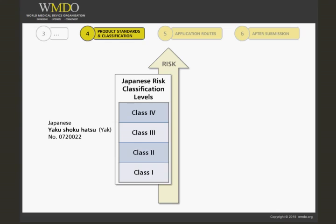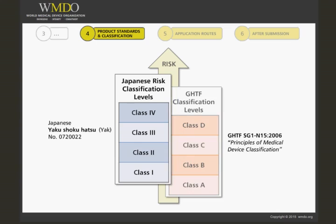YAC number 0720022 is almost identical to the GHTF SG1N15-2006, which gives you a matrix of criteria in which you can classify your device. The end result of the matrix is the risk classification of your device. The GHTF guidance has a device classification system of class A to class D, with A having the least risk. Similarly, the Japanese guidance has a classification system of class 1 to class 4, with class 1 having the least risk.